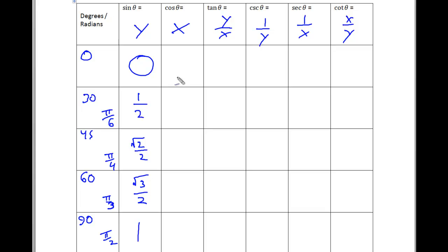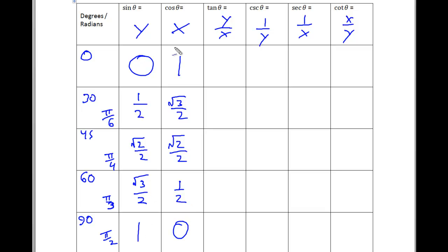You can kind of read the sine and cosine values forward and backwards — 0, 1, 2, 3, 1 if you look at the numerators for sine, and 1, 3, 2, 1, 0 looking at the numerators for cosine. When you look at y over x for tangent, you just take your y and put it on the numerator. 0 divided by 1 is 0, and 1 divided by 0 is undefined.